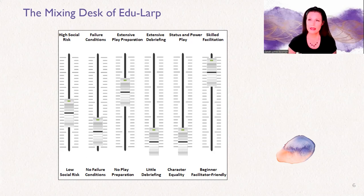Is there status and power in the play, or is there character equality? We talked earlier about player equality. Do the players have an equal amount of agency in the game? This is related to the character roles they're playing within the game. Is somebody the king and everybody else their subjects? That will immediately shift the dynamics in play, which might be quite important to the learning goals or might work against them.